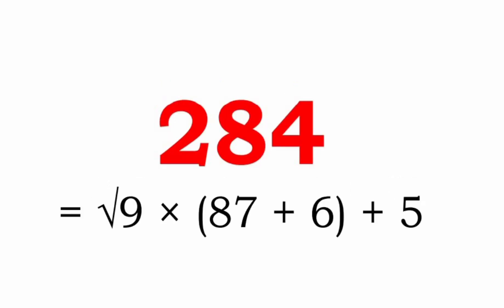If you allow the square root to come into the picture, then we can write 284 as root 9 into 87 plus 6 plus 5. Here the digits 5, 6, 7, 8, and 9 are used in decreasing order.